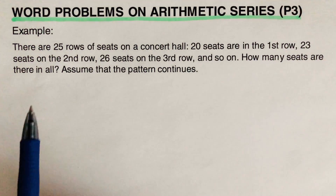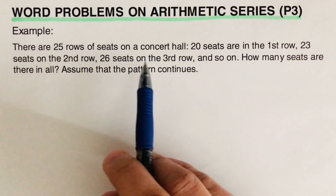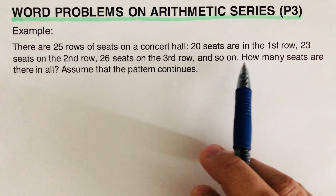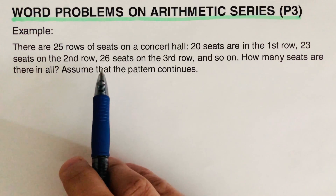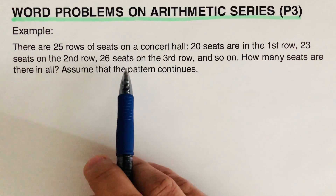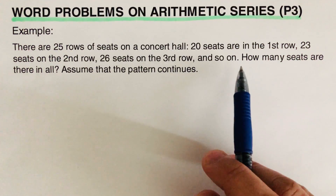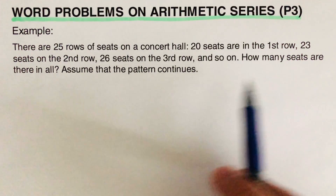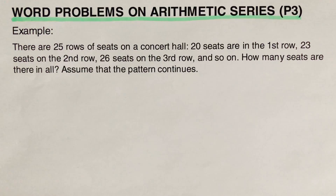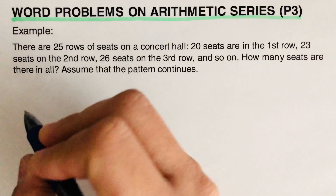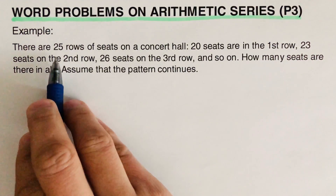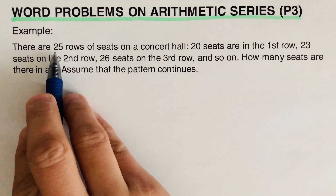There are 25 rows of seats in a concert hall. 20 seats are in the first row, 23 seats are in the second row, 26 seats are in the third row, and so on. How many seats are there in all? Assume that the pattern continues. So let's write it out.